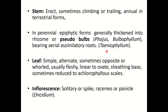Leaf is simple, alternate, sometimes opposite or whorled. Usually fleshy, linear to ovate, with sheathing bases, sometimes reduced to achlorophyllous scales — meaning chlorophyll is absent in those scales.